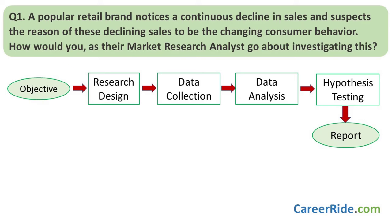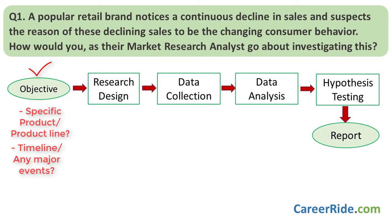But before you begin any work on this, the most important thing to do is clarify the objective. Have a meeting with the stakeholders and get a clear understanding of the objective of the research and its scope. Get a clear picture of things like: is it only a particular product that is affected or is it a category? Since when have the sales been declining? Did any major events take place before or during the period? How are competitors' products doing? All these things help you in getting a starting point, and they also save you time, energy and resources.